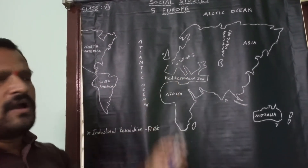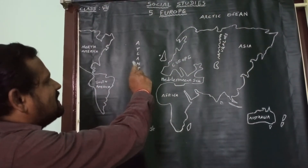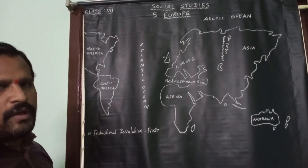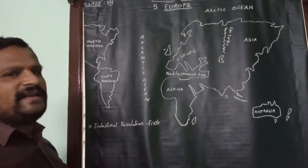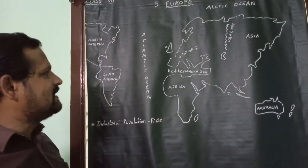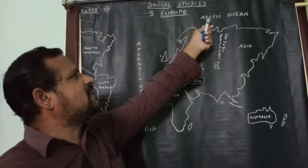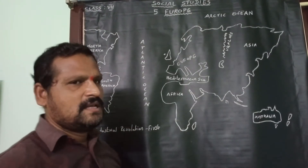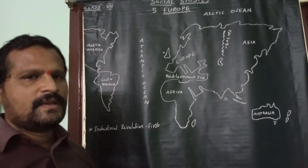The Atlantic Ocean separates America continent and Europe continent. Europeans discovered America 500 years ago, and after discovering America they migrated there and settled. So the boundaries of Europe continent are: Arctic Ocean on the north, Ural Mountains on the east, Mediterranean Sea on the south, and Atlantic Ocean on the west.